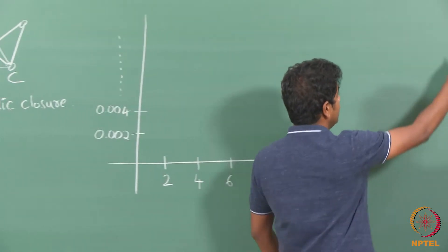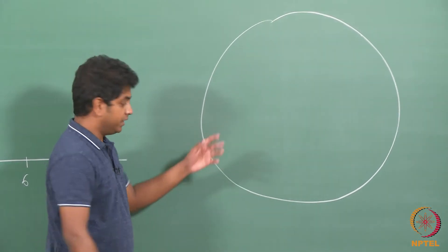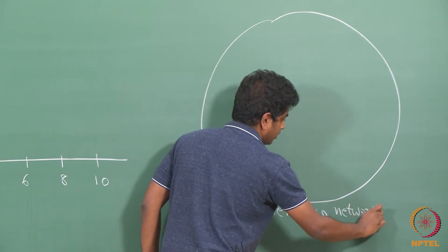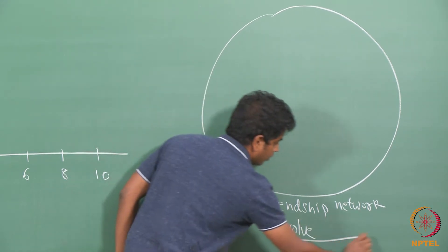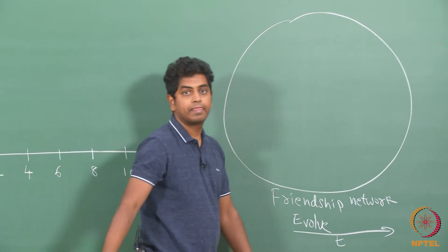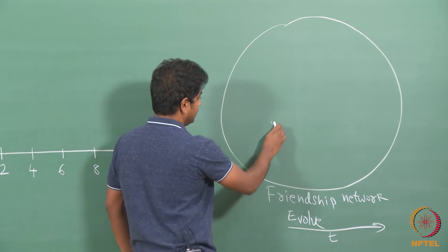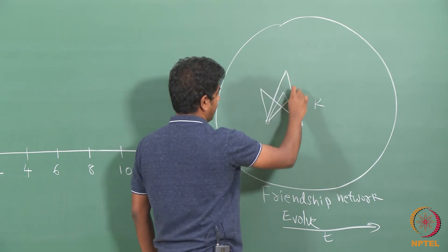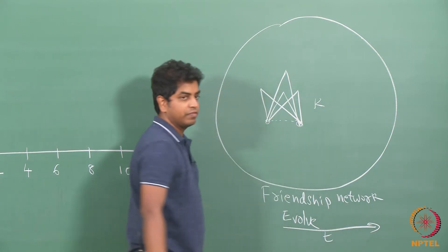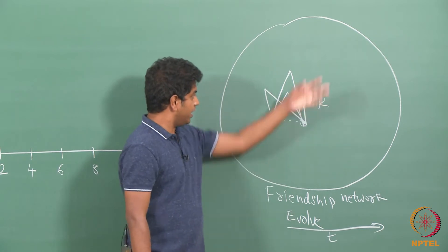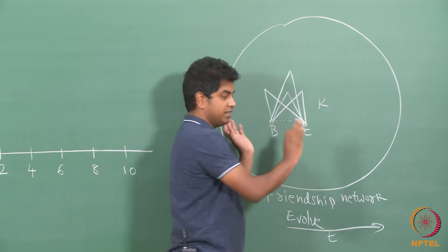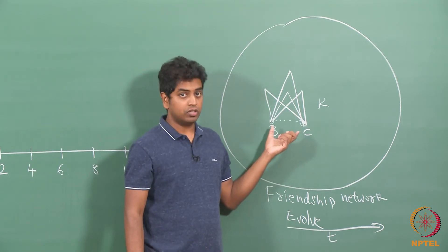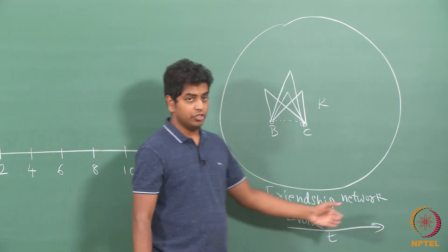We look at a friendship network and observe how it evolves over time. We observe that two people who have k number of common friends — what is the probability of them becoming friends in the next time step? For example, today B and C are not friends but they have k common friends. Tomorrow we observe whether they have become friends, and we keep going until eventually they do.